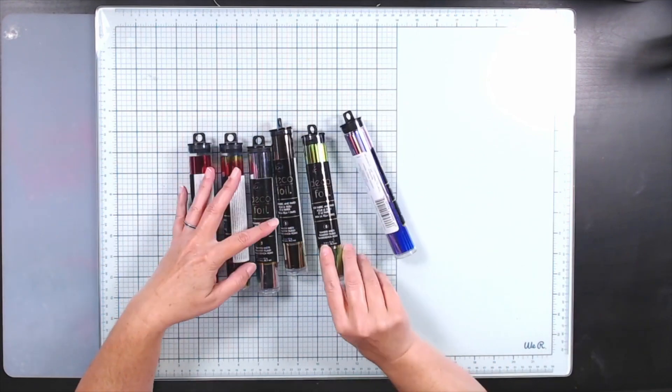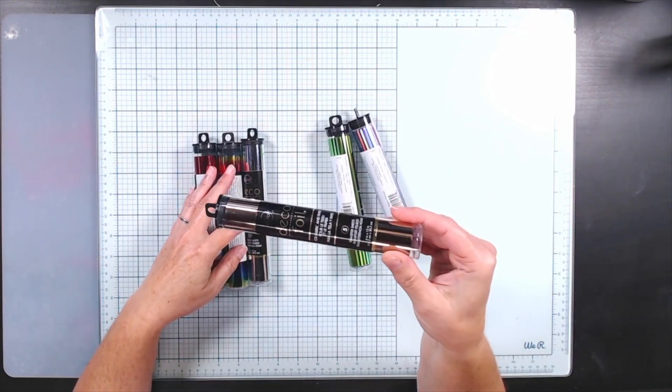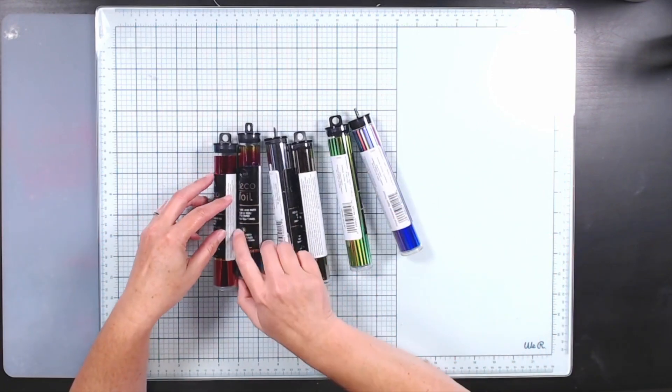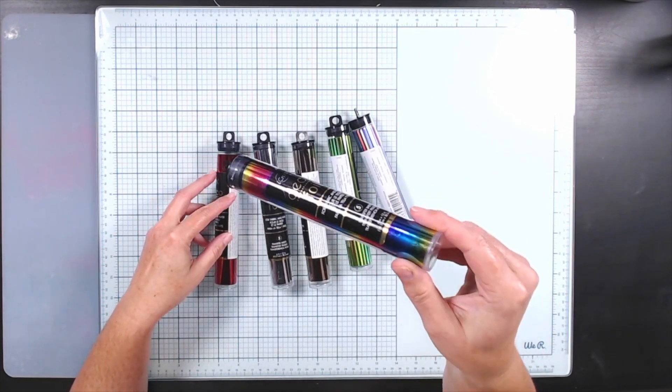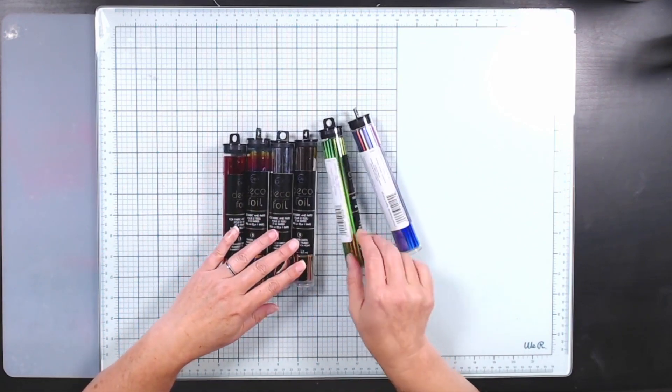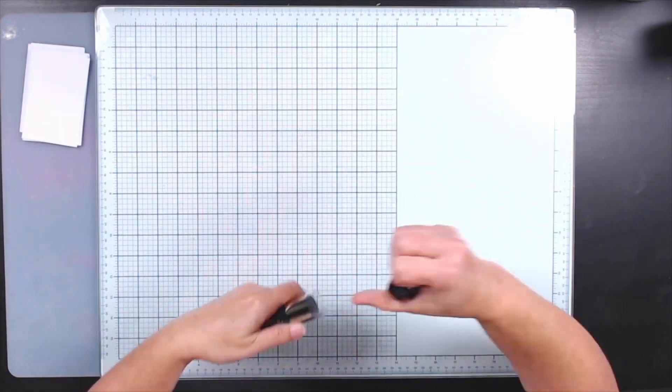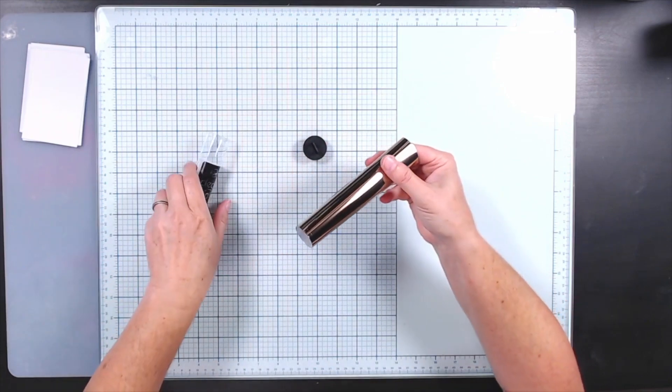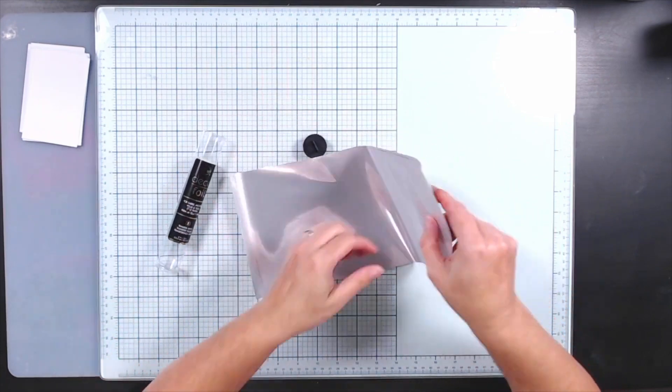Some do require the heat of a laminator machine or similar product. This is DecoFoil, that's the brand by Thermoweb, and it does not require heat but it can be used with heat. So be careful when you're buying foil that you know that you're getting a kind that does not require heat.